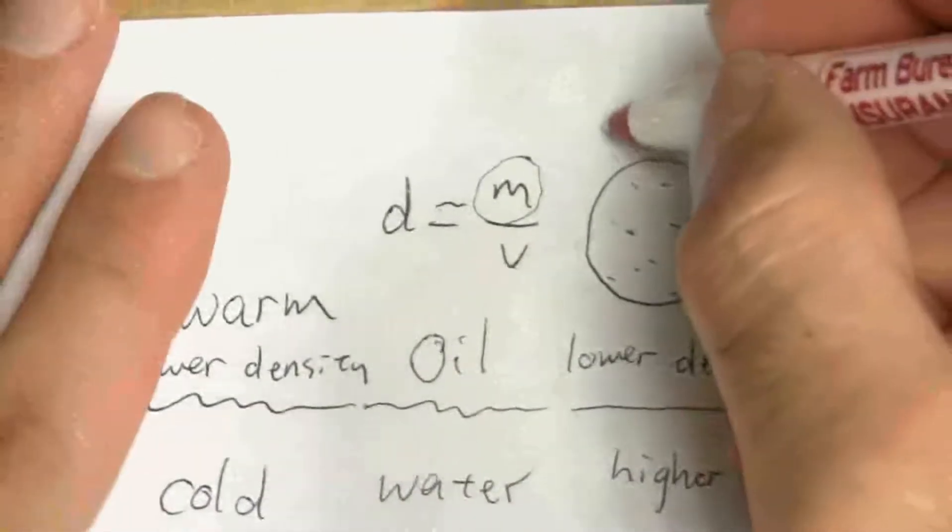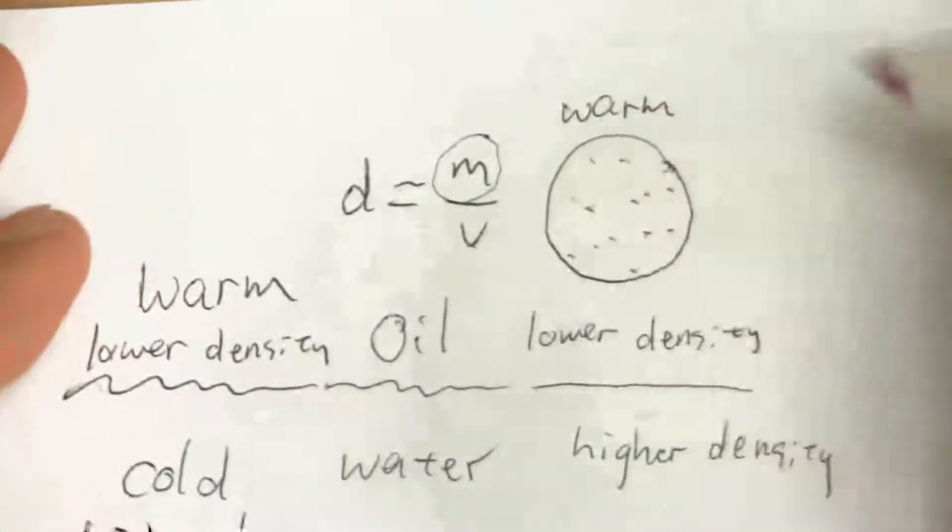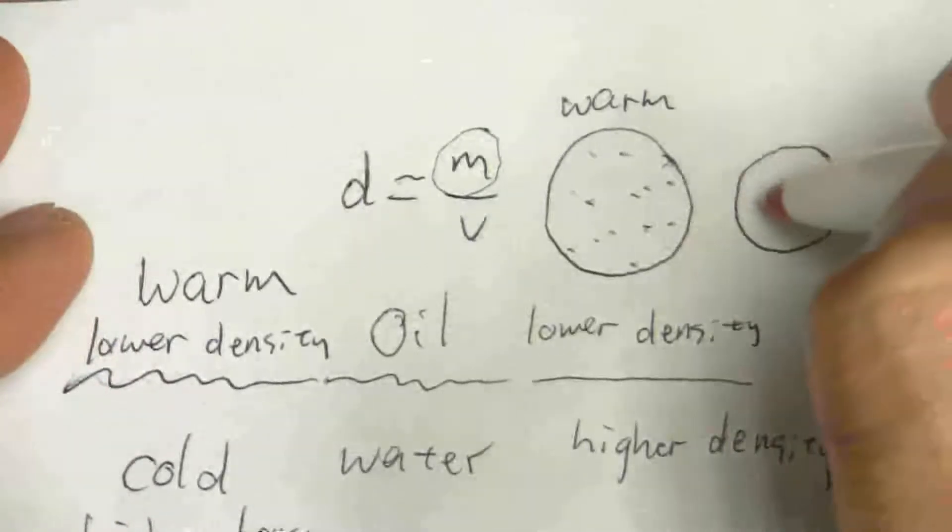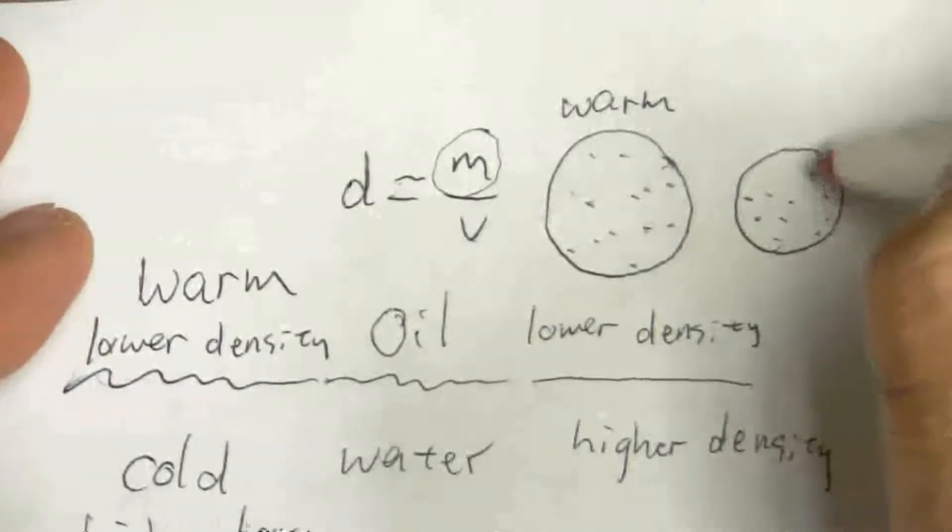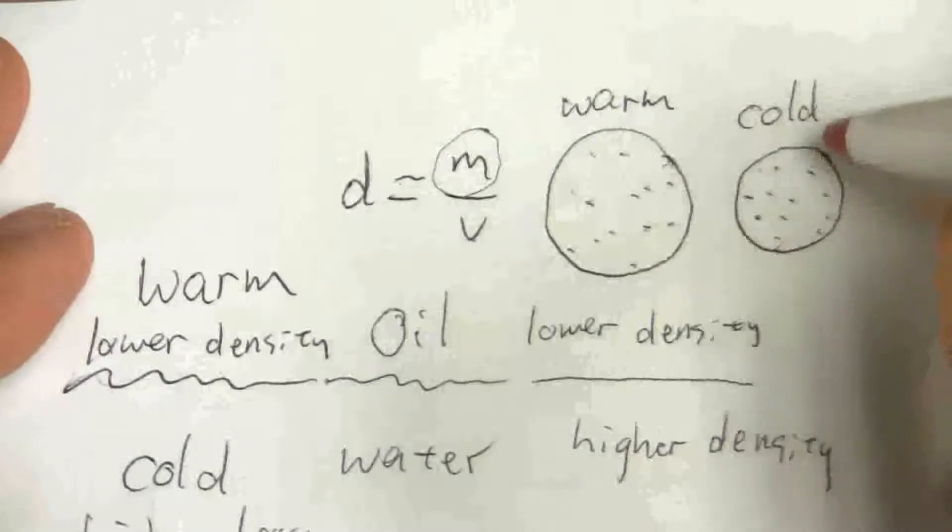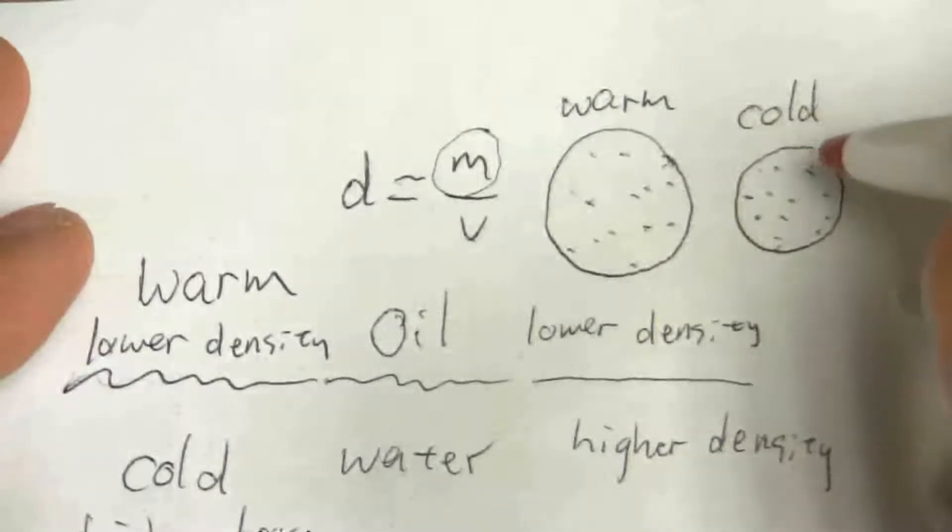And these are warm. Now if I cool it off, without changing the number of particles, I still have the same number of particles, but I've changed the temperature.